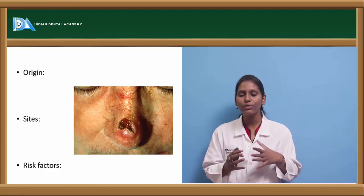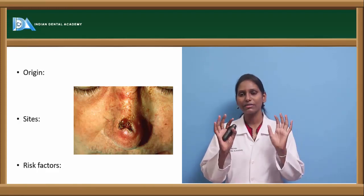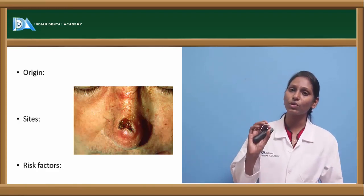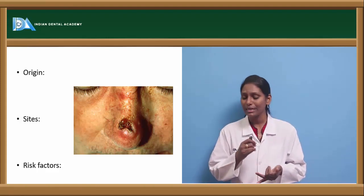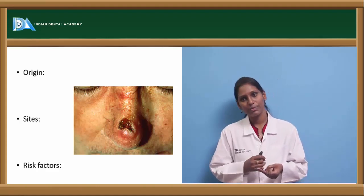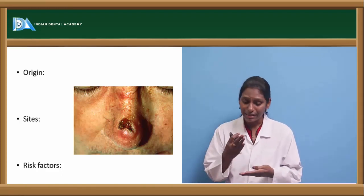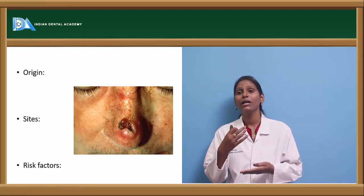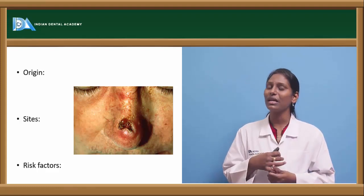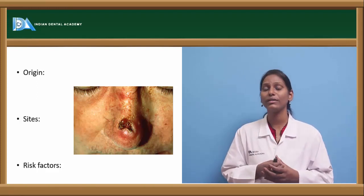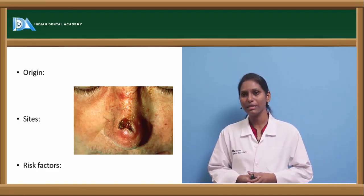Squamous cell carcinoma can occur anywhere there is squamous epithelium. At any squamous-epithelial junction we can see these carcinomas. Skin is the most common site. We can also see it from the junction of skin and mucous membrane, the buccal mucosa, oral cavity, tongue, intra-alveolar, and even in transitional epithelium such as ureters or urinary bladder.